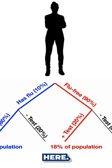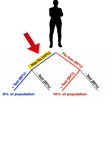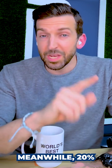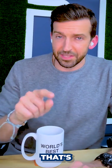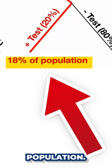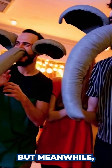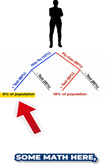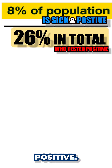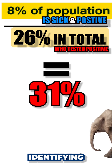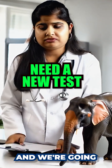Now let's do some math and aggregate our numbers. We know that 80% of the 10% who have the flu and tested positive equals 8% of the overall population. Meanwhile, 20% of the 90% who don't have the flu but mistakenly tested positive is 18% of the population. So 26% of the population in total have tested positive, but only 8% were actually sick. Dividing 8% by 26%, this test is only correctly identifying someone who actually has the elephant flu 31% of the time. There are a whole lot of false positives, and we're going to need a new test.